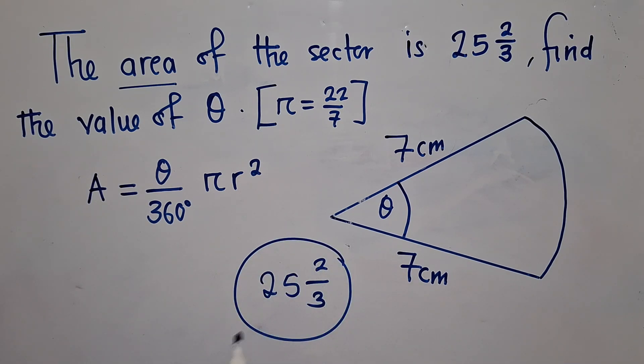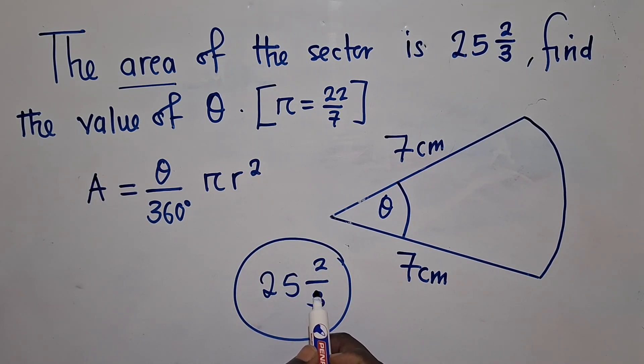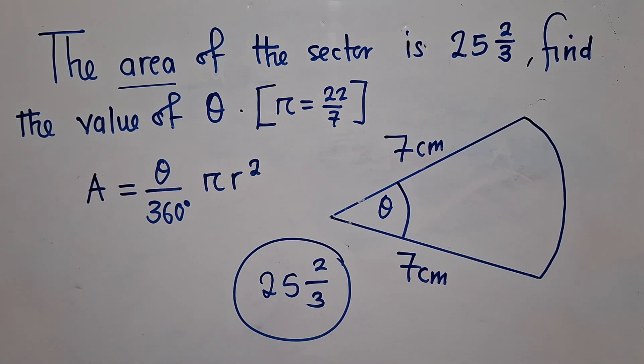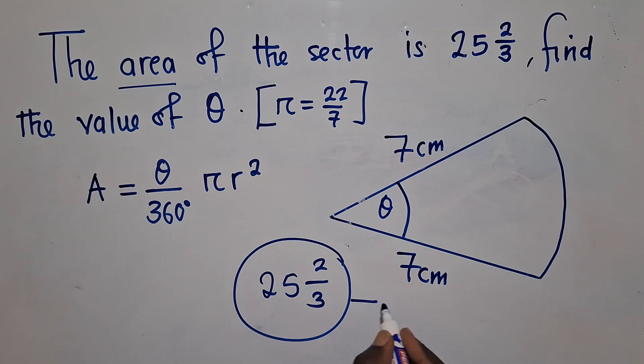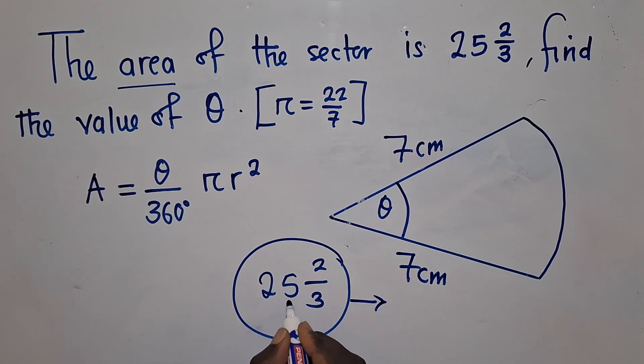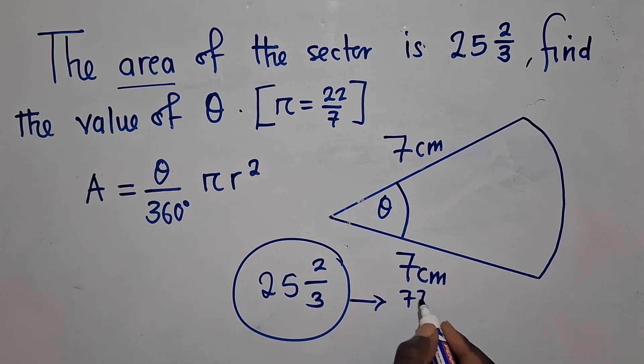It's a mixed fraction. Working with mixed fractions in mathematics is something that is very frustrating and doesn't work out. So what you need to do here is to change this to an improper fraction, so it will be 77 over 3.